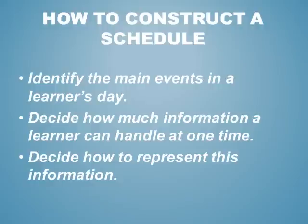You also want to determine the developmental visual stage that your learner is at. The developmental visual stages are: the object stage, the photo stage, the picture symbolic stage, and the text stage. If your learner is at the text stage, you can use words. But if they're at the object stage where you have to use objects because they don't understand pictures yet, then text would not make sense. You need to represent the information in the appropriate format for your learner.